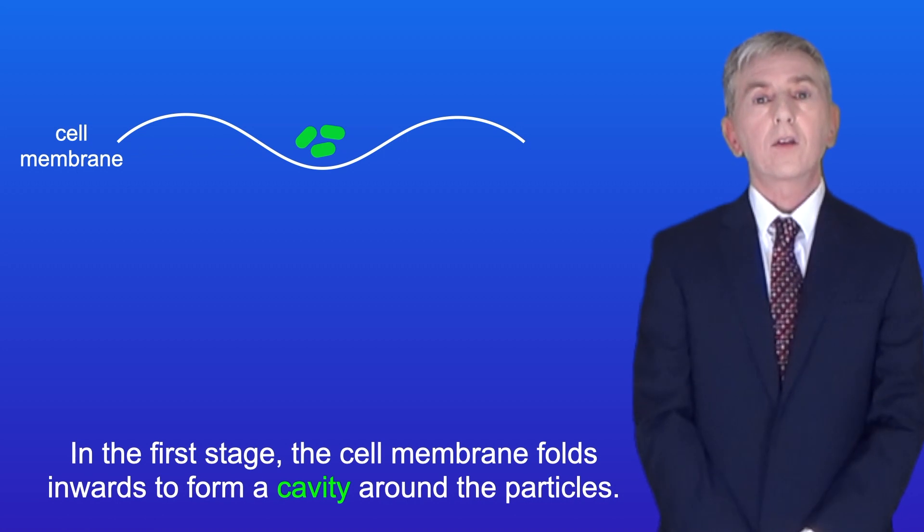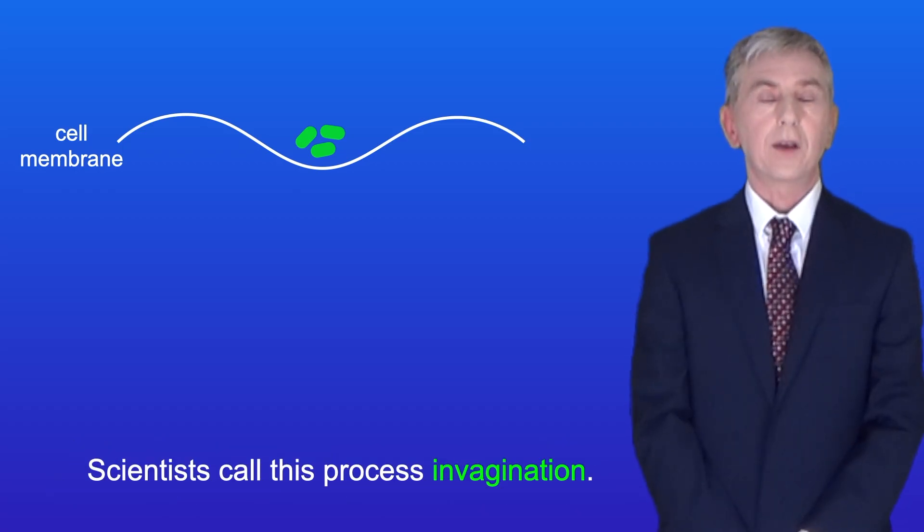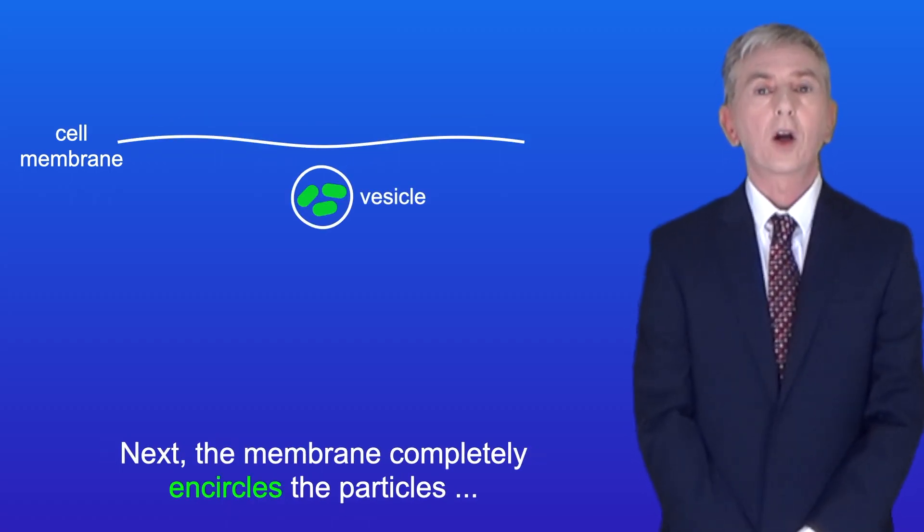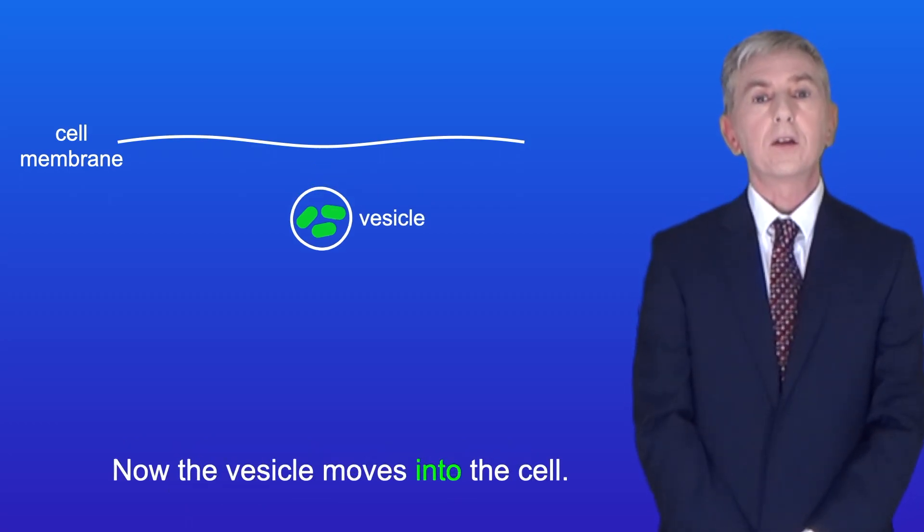In the first stage, the cell membrane folds inwards to form a cavity around the particles. Scientists call this process invagination. The particles to be transported are now in the cavity. Next, the membrane completely encircles the particles to form a vesicle like this. Now the vesicle moves into the cell.